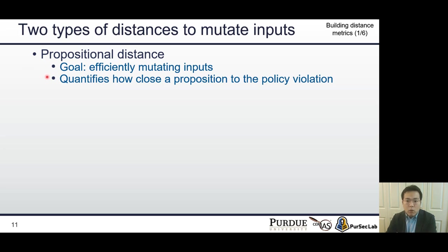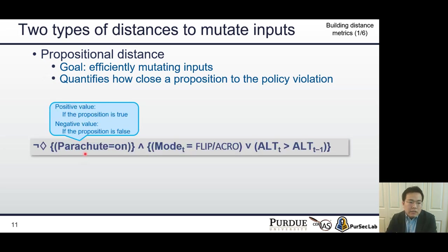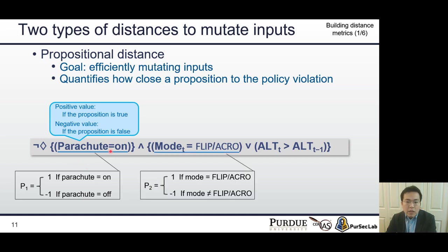If the proposition is satisfied, we assign a positive value. For example, the RV's current state is releasing the parachute. In that case, we assign a positive value 1. On the other hand, if the proposition is not satisfied, we assign a negative value. For example, the RV's current fly mode is not flip or acro mode. In that case, we assign a negative value, such as minus 1.